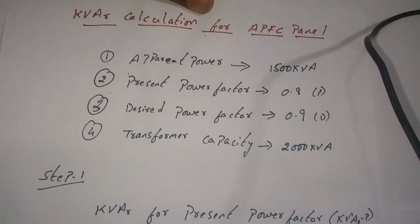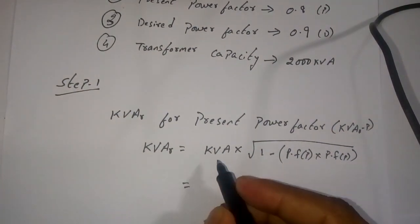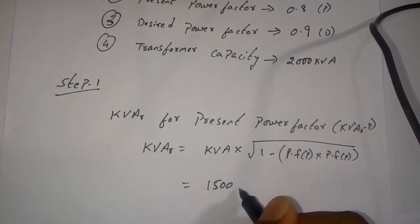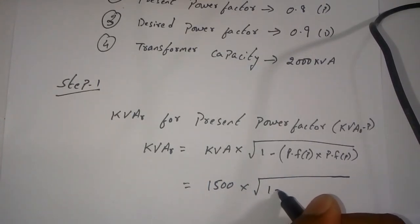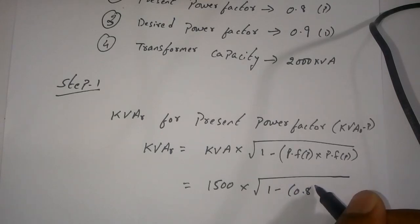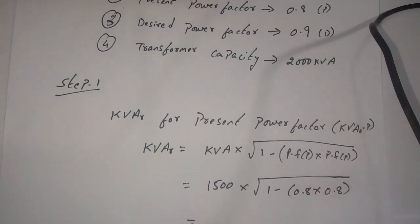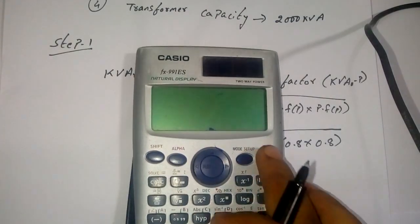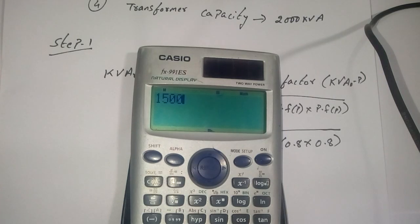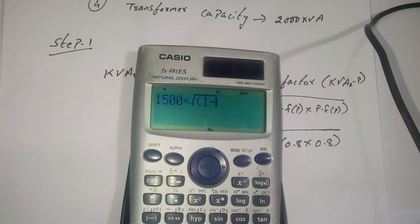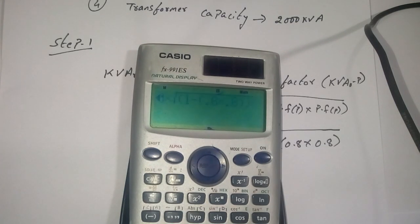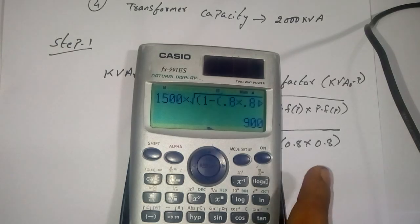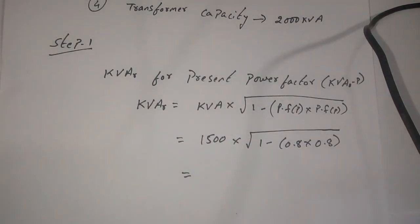From the scenario above, the apparent power is 1500 kVA. So the calculation is: 1500 × √(1 − 0.8 × 0.8). The answer is 900 kVAR. Step 1 is finished.